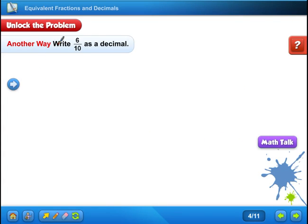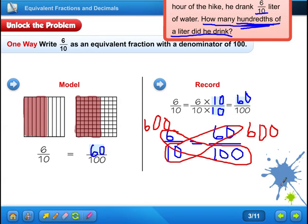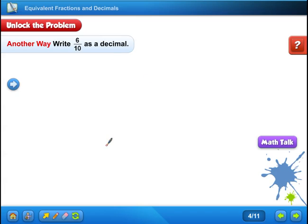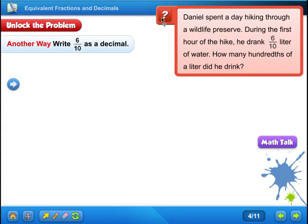Let's try the next little section. So now write six-tenths as a decimal. We just wrote it. How many liters, how many hundredths of a liter did he drink? Well, we know it's sixty hundredths, but now we want to figure it out as a decimal.